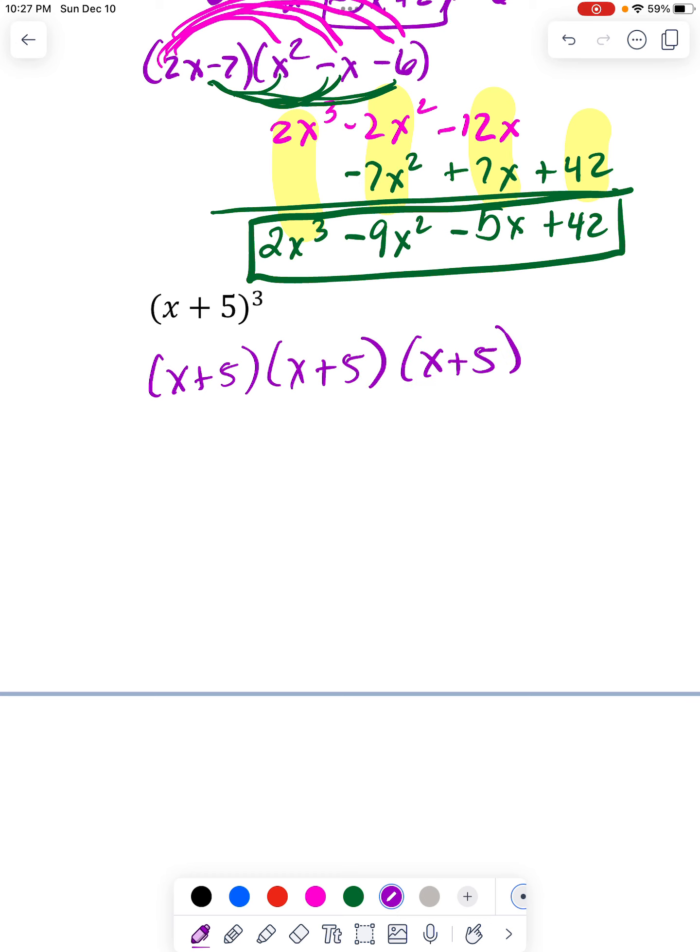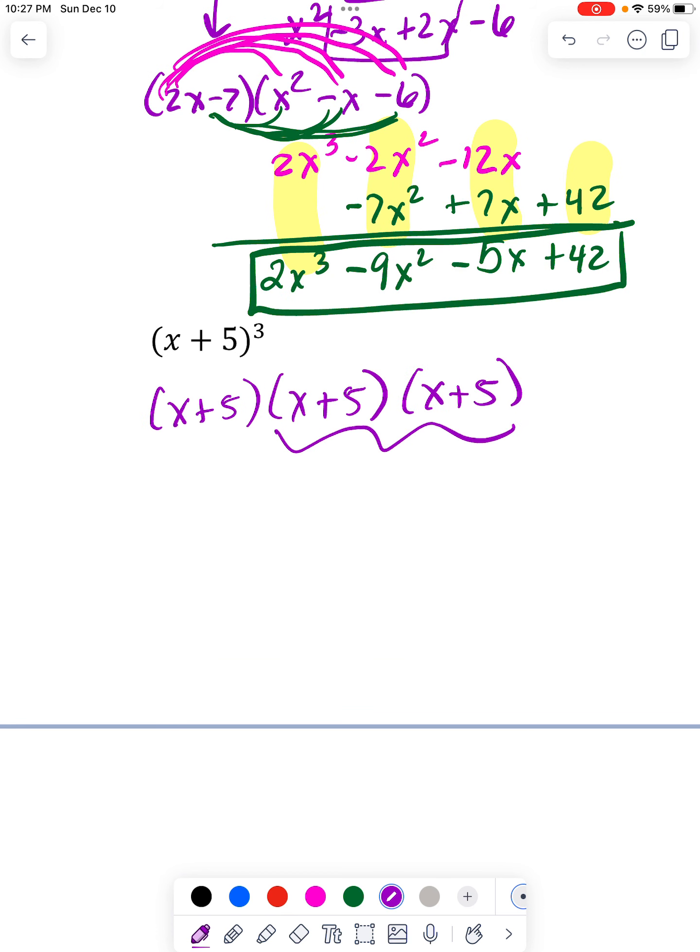So this is sort of, again, like the problem above it in that I can FOIL two of the three. So I'll get x² plus 5x on the outside plus 5x on the inside numbers. And then 5 times 5 puts a 25 at the end. These two go together.